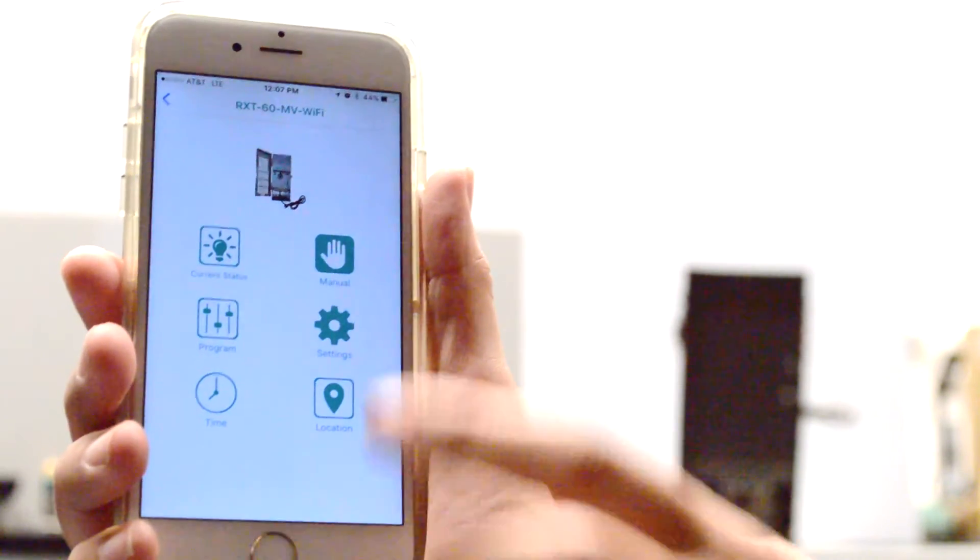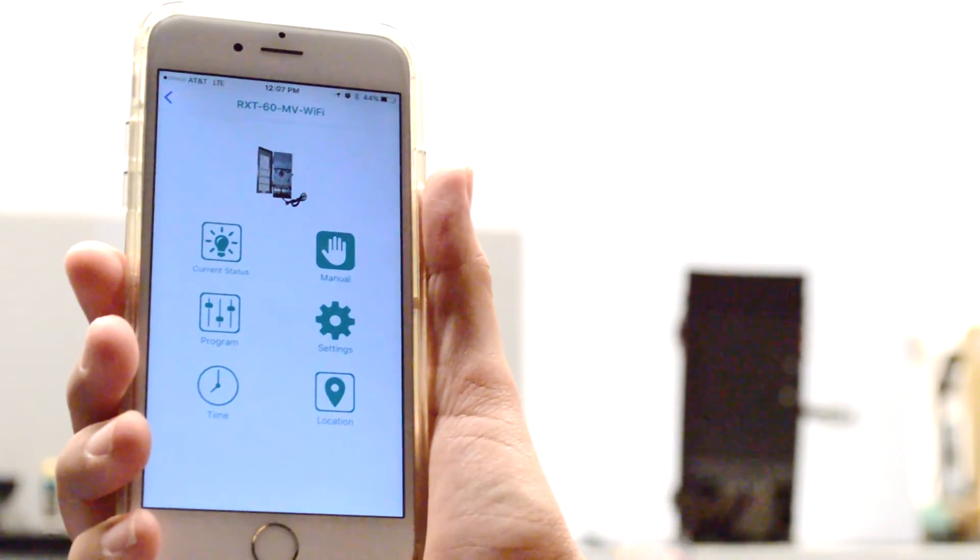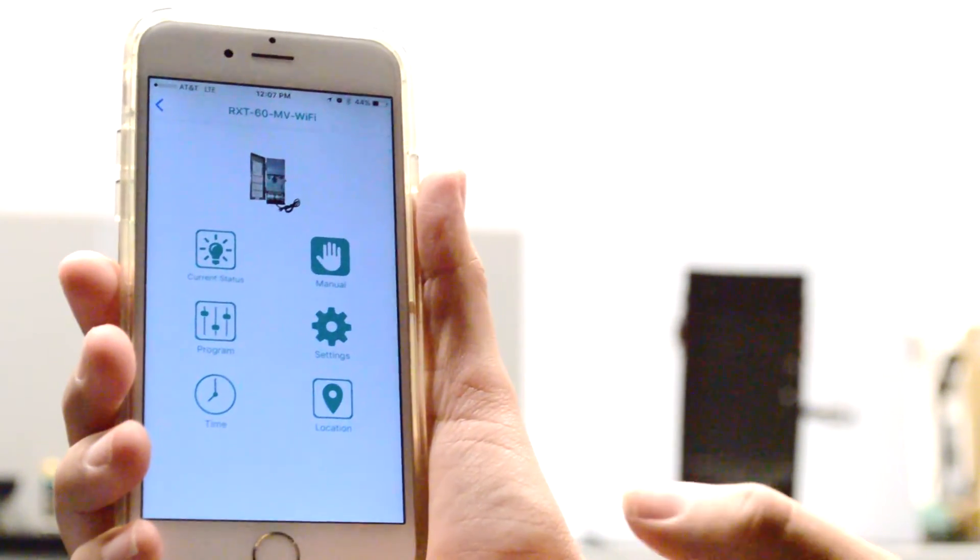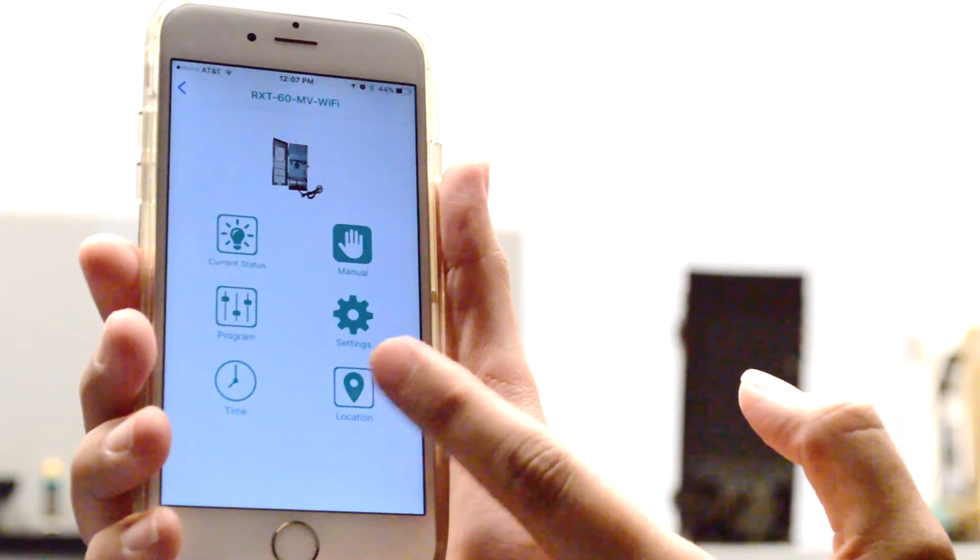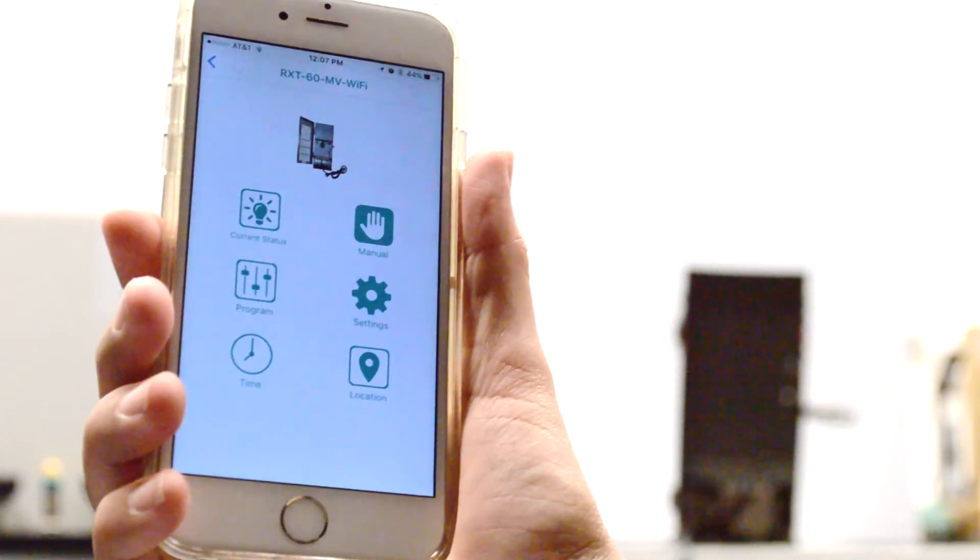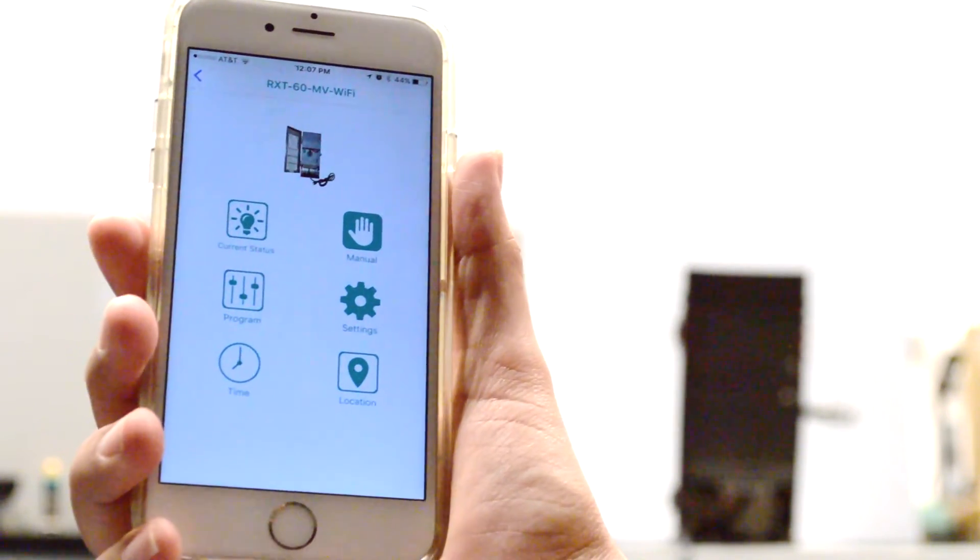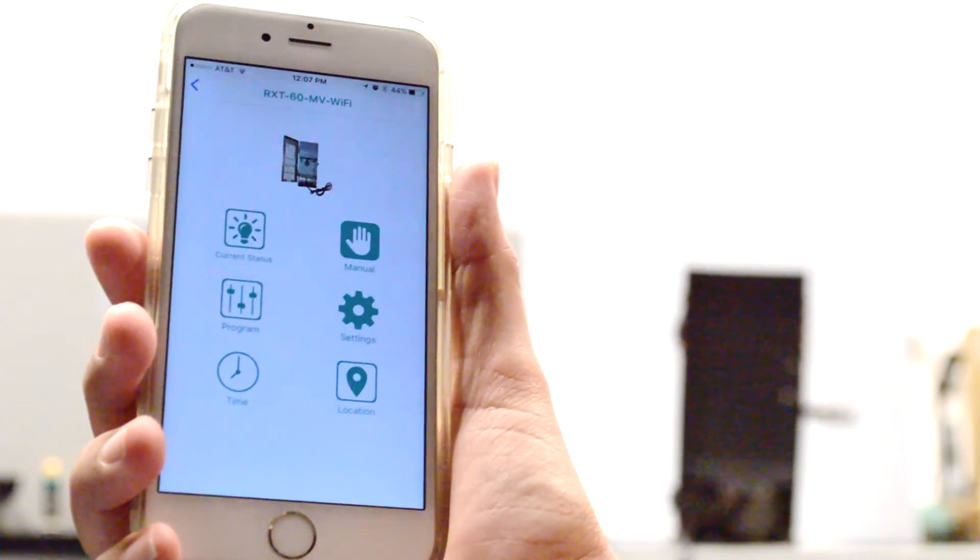Going back, we have current status, so you can see how all your Transformers are working. There's also timer, location. This will show on your contractor's end and also on the homeowner's end, where all the Transformers are located.